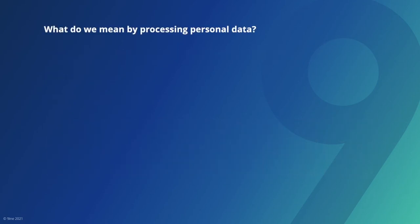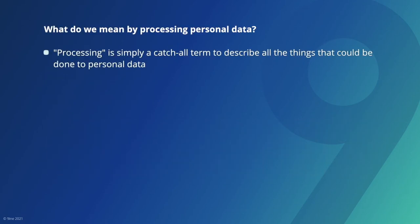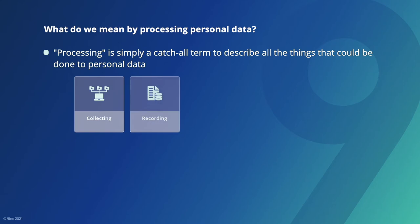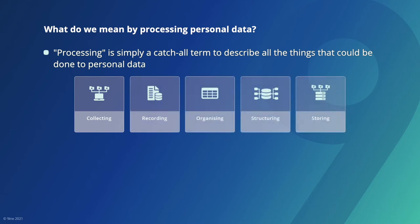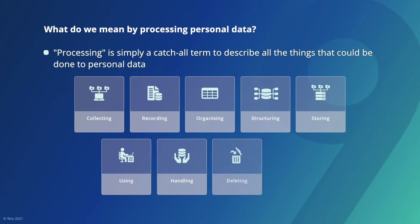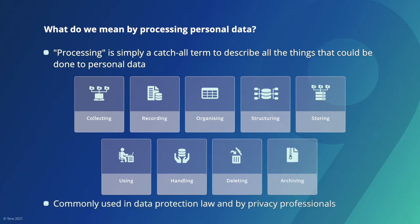Processing is simply a catch-all term to describe all the things that could be done to personal data. It includes collecting, recording, organizing, structuring, storing, using, handling, deleting or archiving among many other things. It's a word commonly used in data protection law and by privacy professionals, and it just means doing something with personal data.